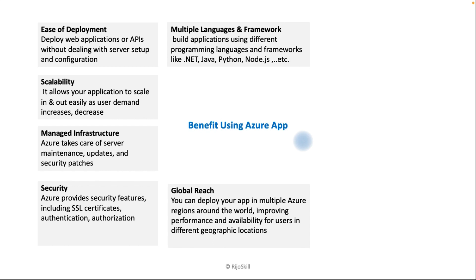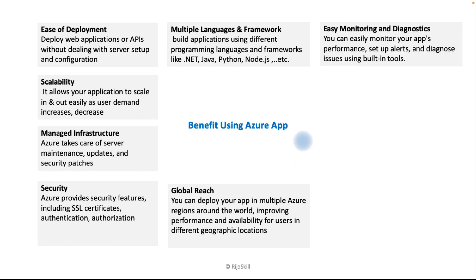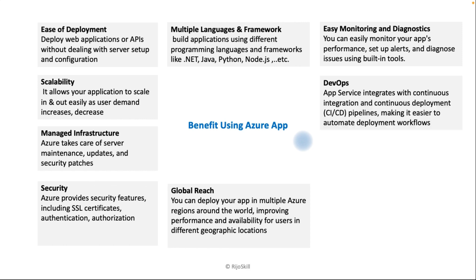Global reach — you can deploy your application to multiple Azure regions around the world, improving performance and availability for users in different geographical locations. For example, you can host in West US, East US, and other regions based on where your users are. Easy monitoring and diagnostics — you can easily monitor your app performance, set up alerts, and diagnose issues using built-in tools.